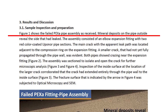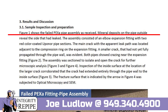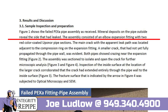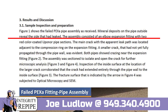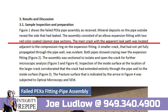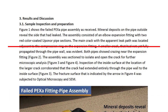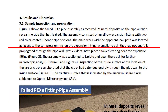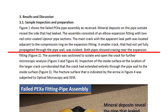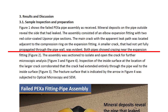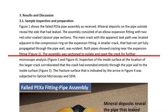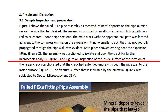Figure one shows the failed PEX-A pipe assembly as received. Mineral deposits on the pipe outside reveal the side that had leaked. The assembly consisted of an elbow expansion fitting with two red color-coated Uponor pipe sections. The main crack with the apparent leak path was located adjacent to the compression ring on the expansion fitting. A smaller crack that had not yet fully propagated through the pipe wall was also evident. Both pipes showed crazing near the expansion fitting.